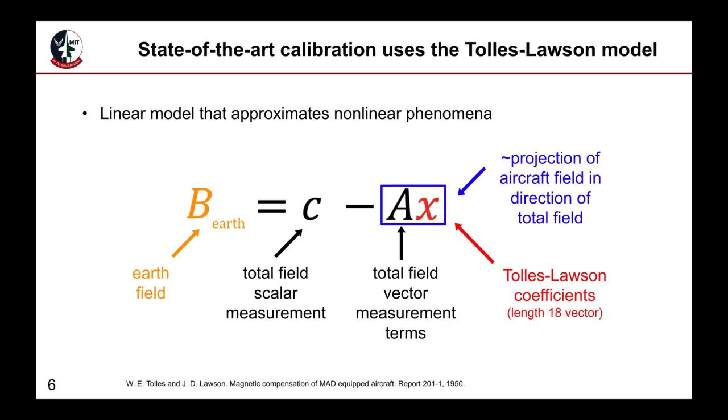The A matrix is multiplied by a set of coefficients, shown by the letter X in this equation, and these coefficients are determined during the calibration flight. The details of the A matrix and X vector are not in scope for this talk, but what matters is that together they represent the aircraft field, which is essentially the corruption to the raw measurement and must be subtracted out.